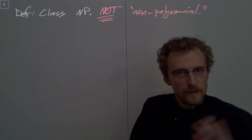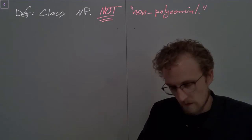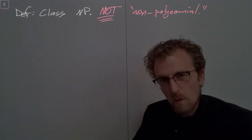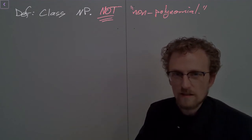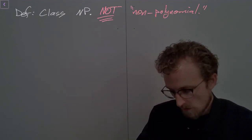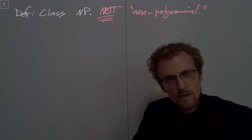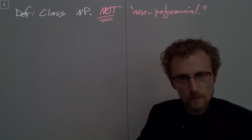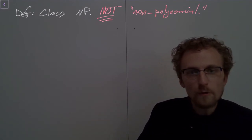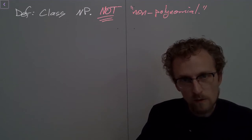So if you're taking 5700, you're going to see this stuff in more detail. What the N means here is actually non-deterministic. The class NP is formally defined as the class of decision problems that can be solved by a non-deterministic Turing machine, which is language that's outside the scope of topics for this algorithms class.